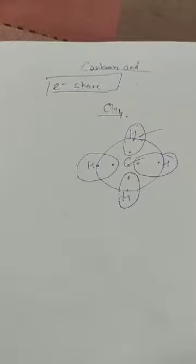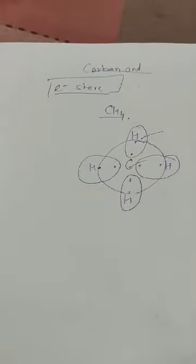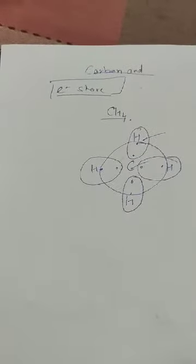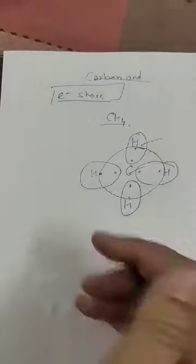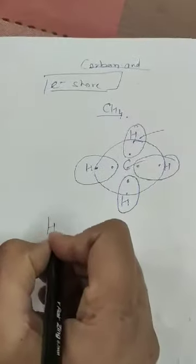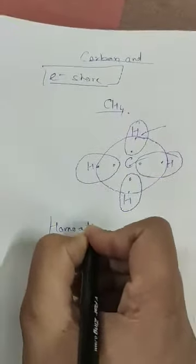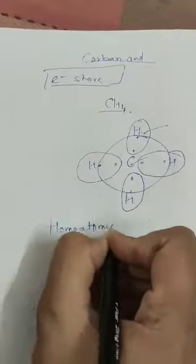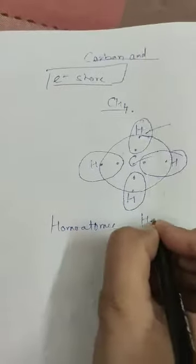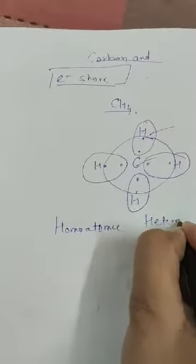Covalent bonds form two types of molecules: homoatomic and heteroatomic.